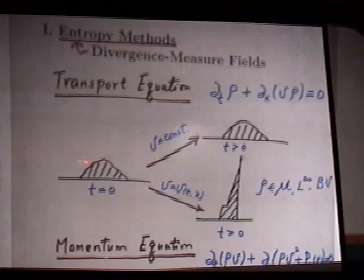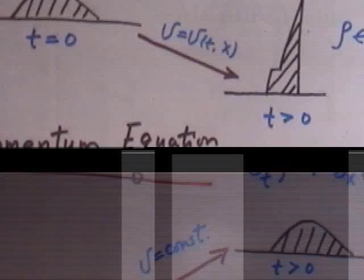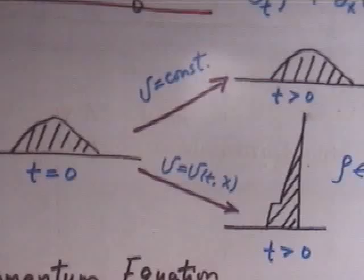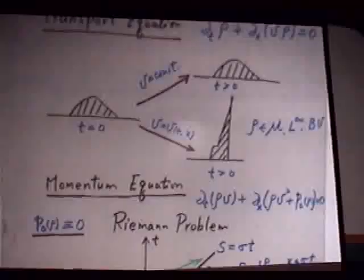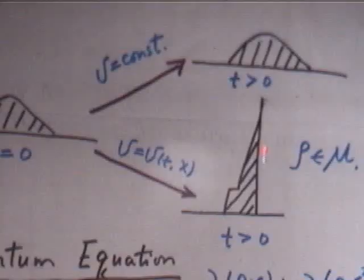If V is not constant but a function of t and x, the situation can be very complicated. For example, we can allow discontinuities, and there can be concentration phenomena. In general, the density ρ lives in the space of measures — it could be infinite or sometimes in BV. In many physical situations, V is not a given function but is governed by other partial differential equations.